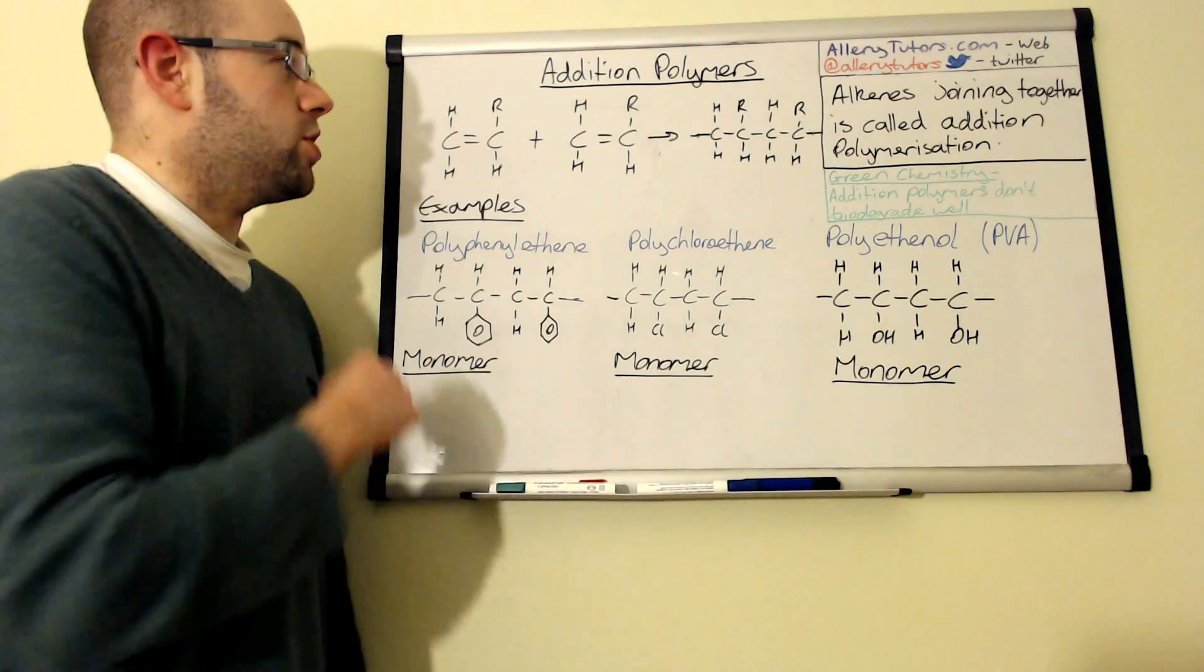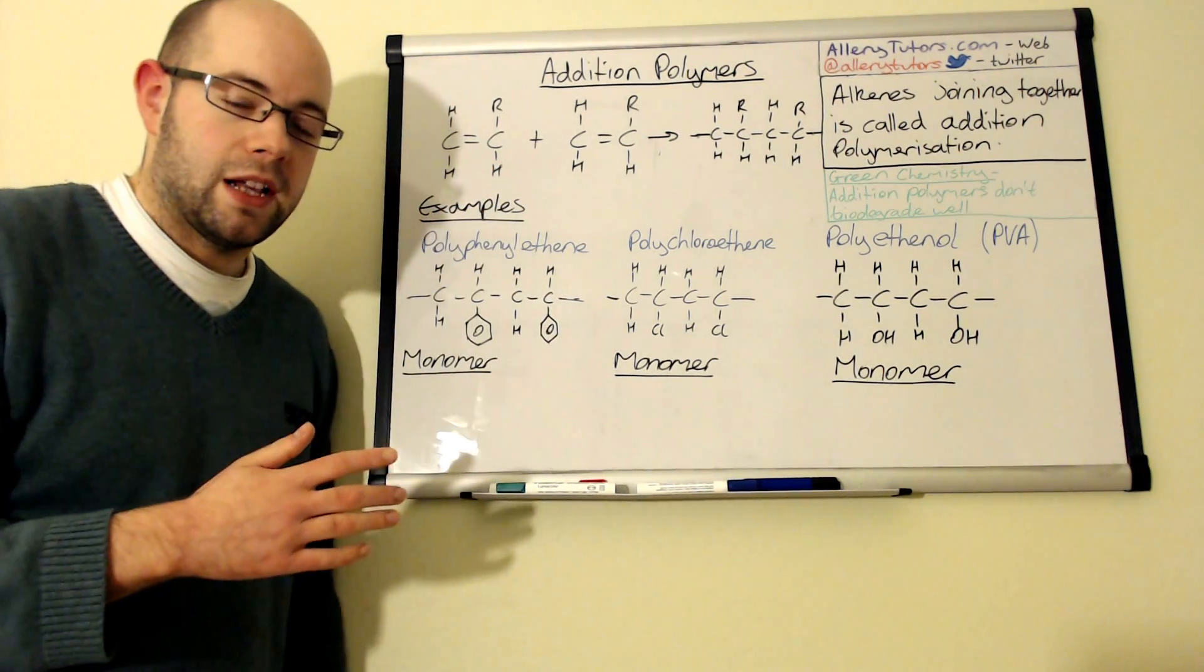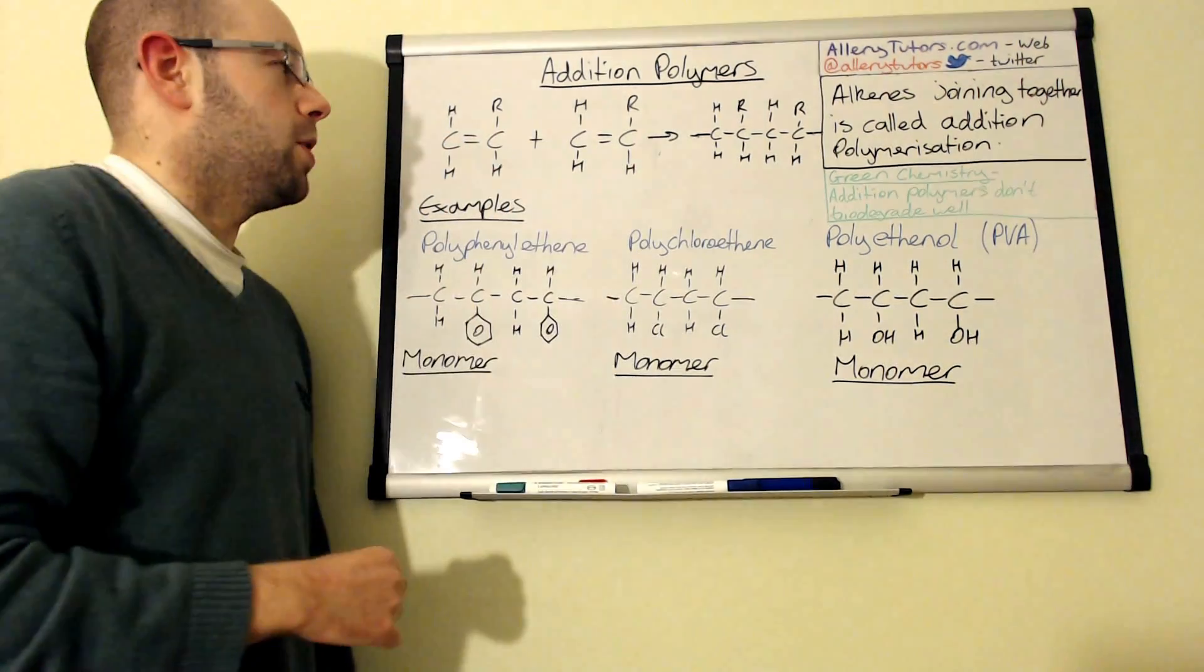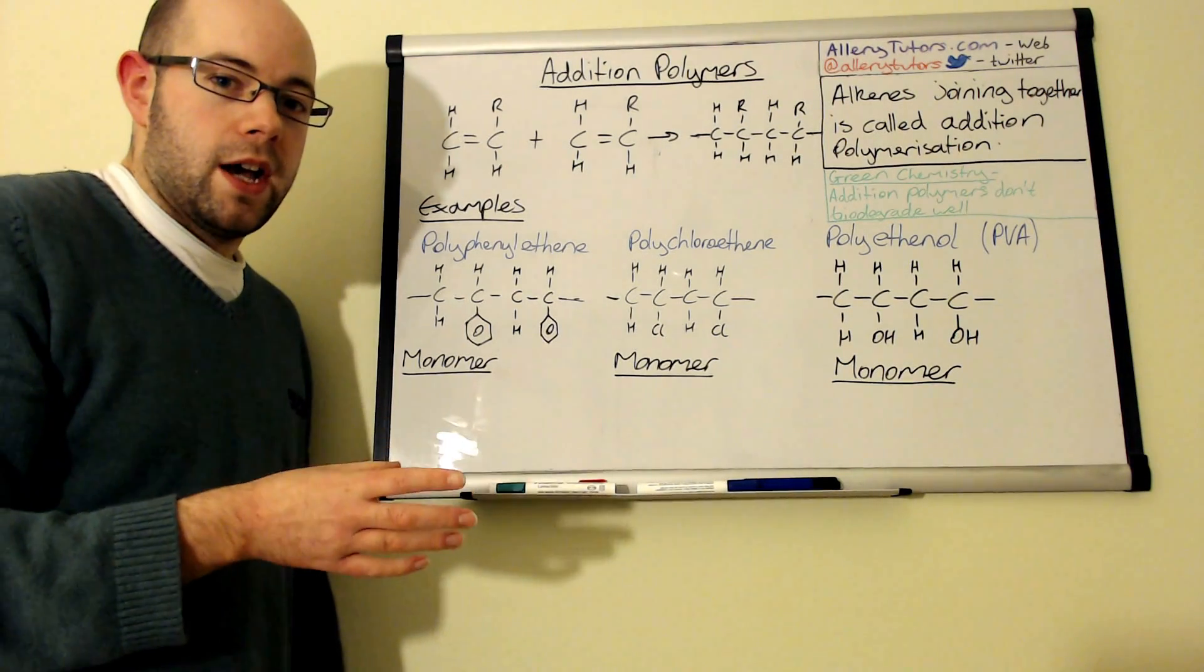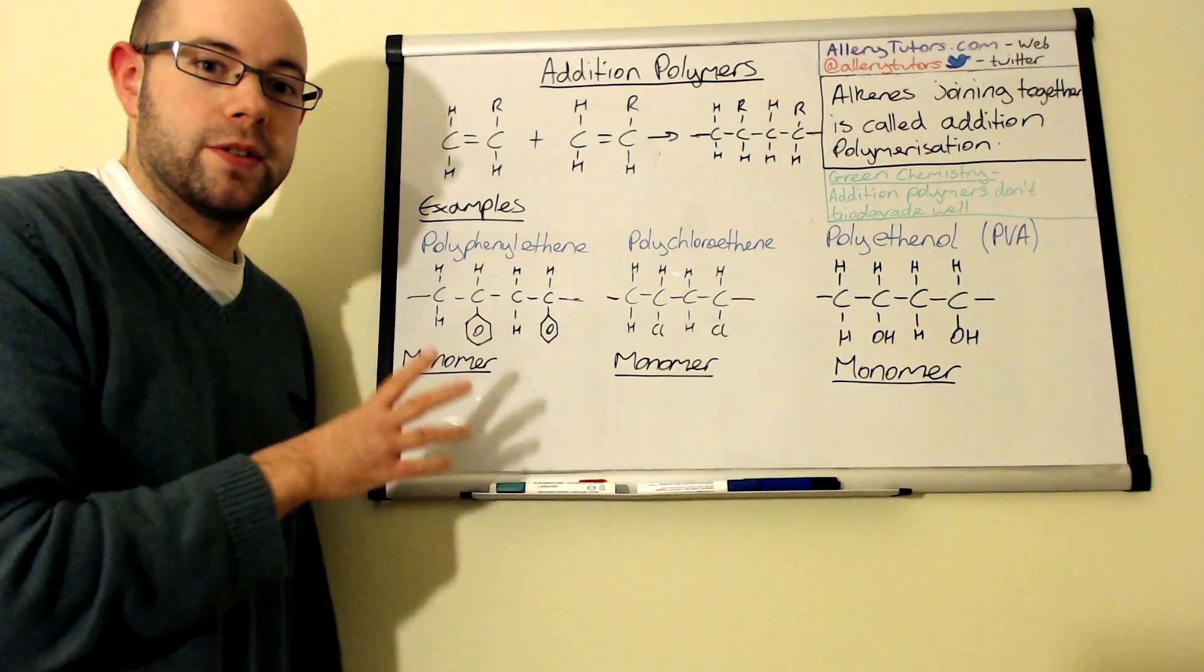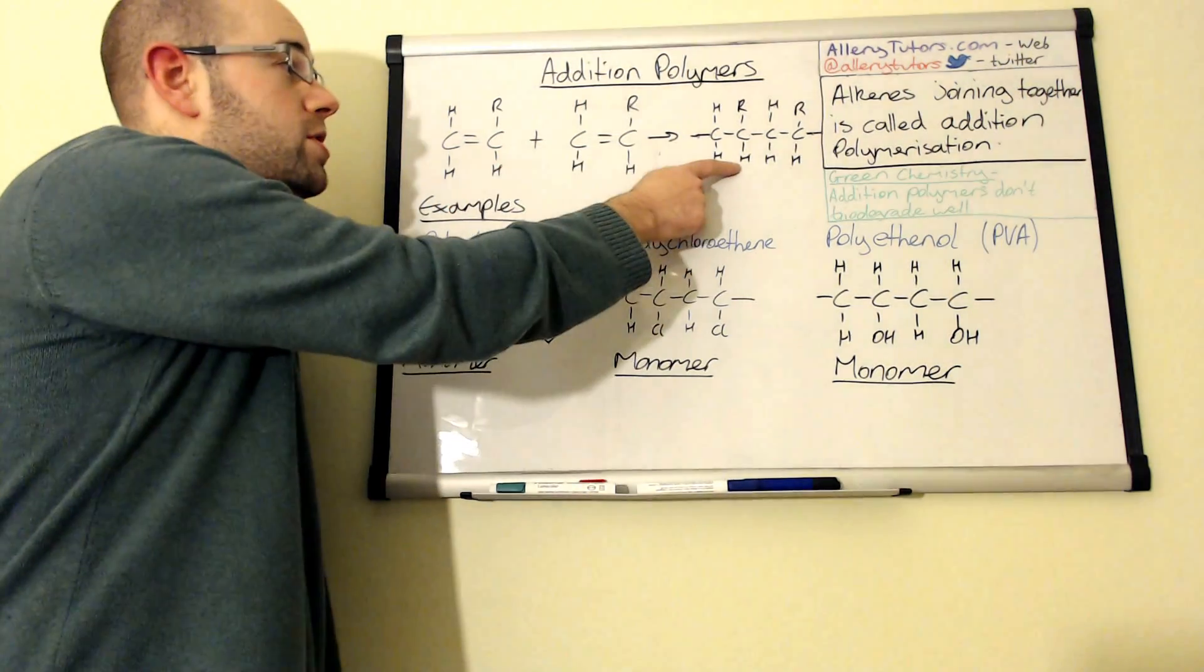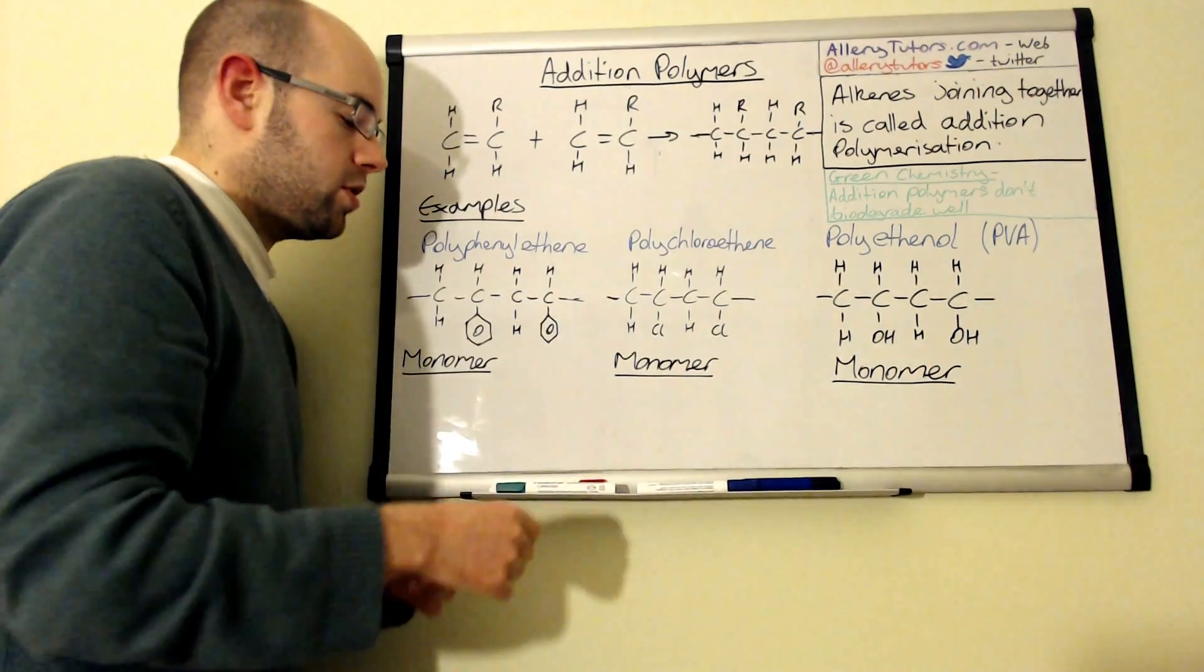We've got two alkenes here. An alkene obviously has a double bond, they're unsaturated molecules and we can join them together to form our polymer. Normally in polymerization we have two of the same alkene that's joining together but you can have different ones, but for the purpose of this we're just going to keep it simple and keep them the same. These will join together to form a polymer. That double bond opens up and we form this long chain.